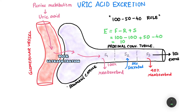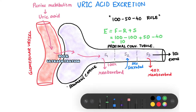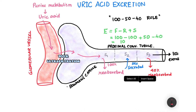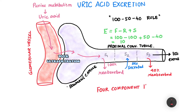This is the idea of uric acid excretion in humans. This idea is known to doctors as four-component handling of uric acid in the kidney. So this summarizes the idea of uric acid excretion in the human body.